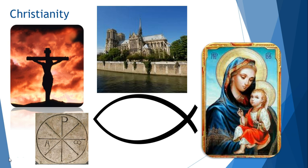On this first slide, you will see several of the symbols for Christianity. First, of course, is the cross, which represents the crucifixion of Christ. Next is the fish, or the ichthus, and also the chi-rho, which form the first two letters of the Greek word Christos. This chi-rho also includes the Greek letters for alpha and omega, meaning beginning and the end.